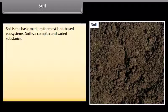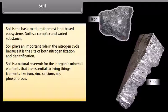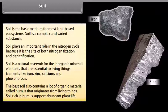Soil is the basic medium for most land-based ecosystems. It is a complex and varied substance. Soil plays an important role in the nitrogen cycle because it is the site of both nitrogen fixation and denitrification. Soil is a natural reservoir for inorganic mineral elements essential to living things, such as iron, zinc, calcium, and phosphorus. The best soil also contains a lot of organic material called humus that originates from living things. Soil rich in humus supports abundant plant life.